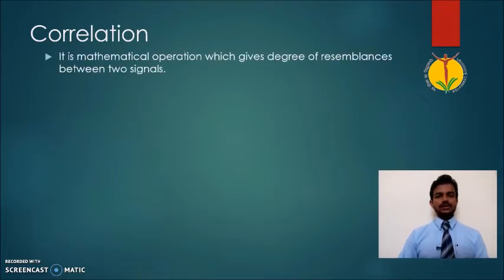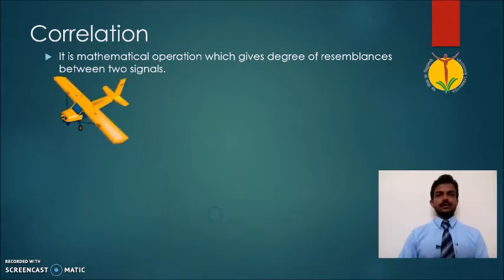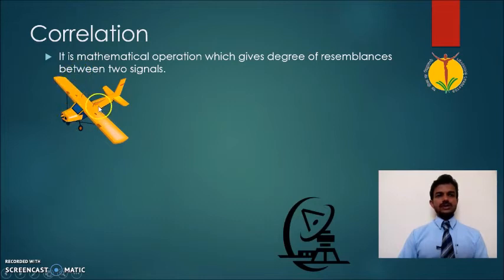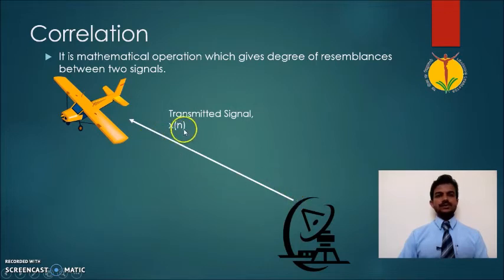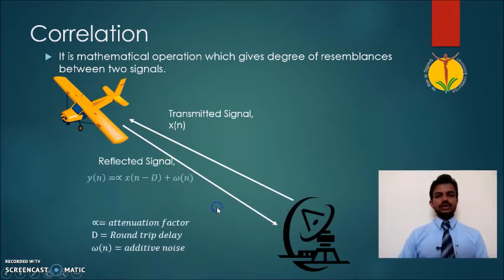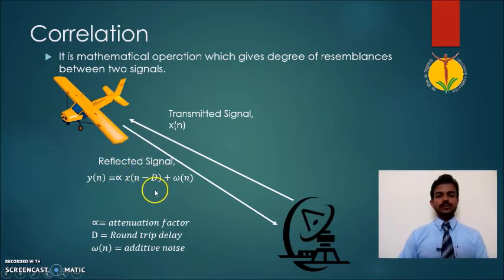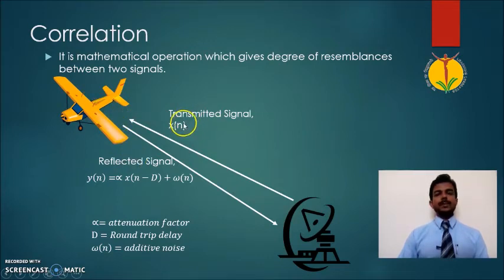It has lots of applications such as image processing and in radar systems where we have to compare two data sequences. Suppose we have one spacecraft available in space and one signal is transmitted from a radar system. Let us denote it by X. The reflected signal from that spacecraft let us denote as Y. So the radar system compares these two data sequences, that is X and Y, and finds out the actual distance of this object. To compare these two data sequences we use the correlation property.